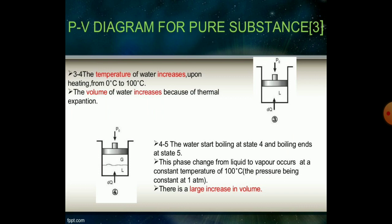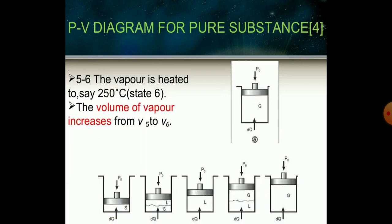From point 3 to 4, the temperature of water increases upon heating from 0 to 100°C, and the volume increases due to thermal expansion. At point 4 to 5, the water starts boiling. The phase change from liquid to vapor occurs at the constant temperature of 100°C, and there is a large increase in volume of the water.